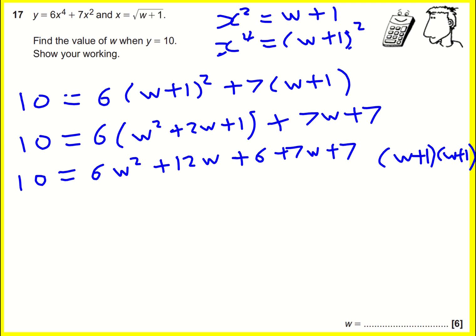And now I can start simplifying this. So I think I'll leave the 10 on the left-hand side for the moment. 10 equals 6w squared plus 19w, if I add these two together, plus 13. And we're nearly there, I can now write that 6w squared plus 19w plus 3 equals 0, because of minus 10 from both sides.